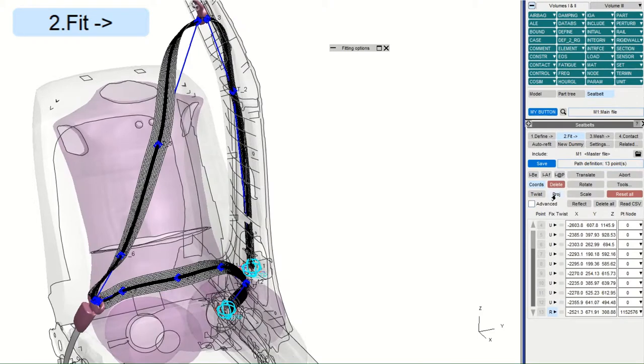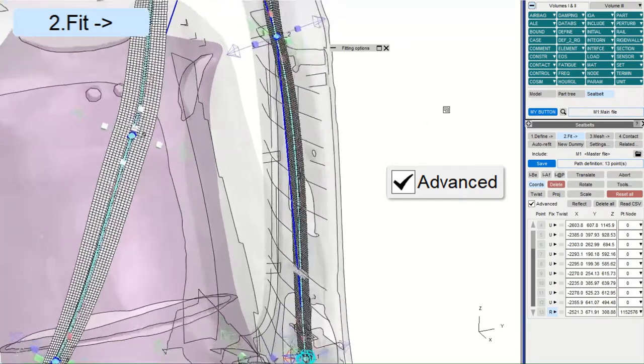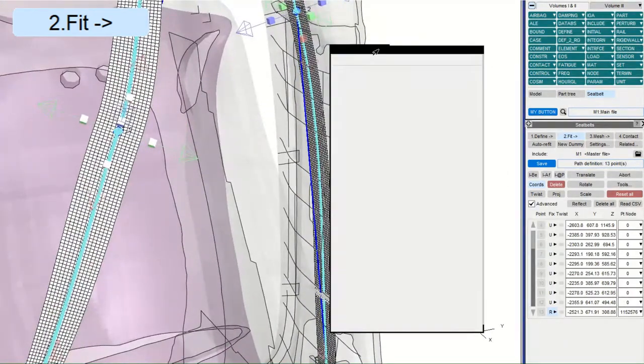The Define Path menu hasn't changed, with options to control projection, twist and coordinates at each point. From 18, the Advanced checkbox activates the new editor, giving us a triad of drag handles at each point and many other controls.